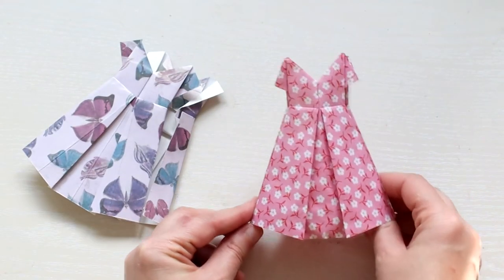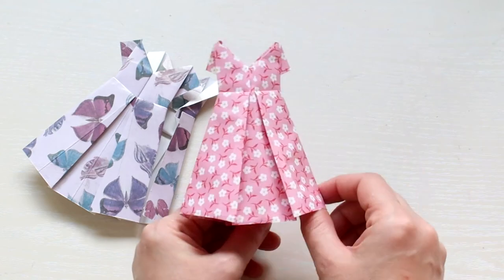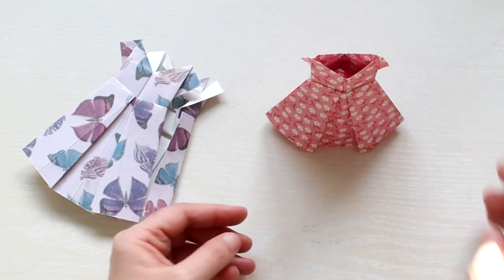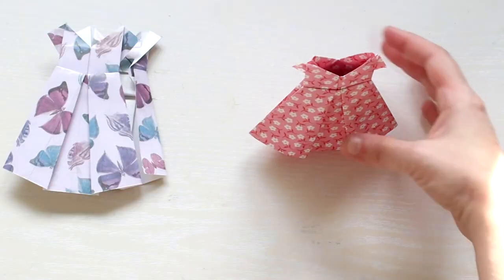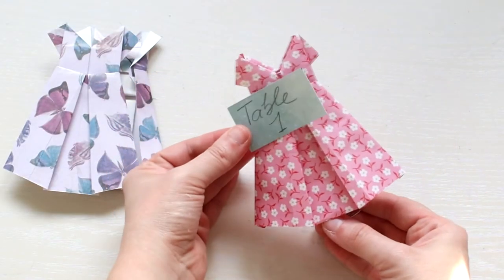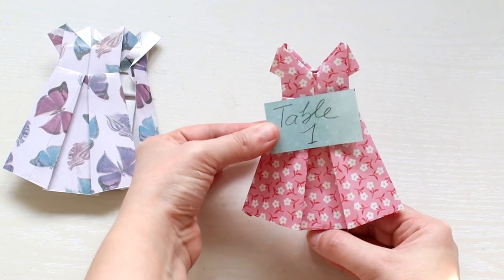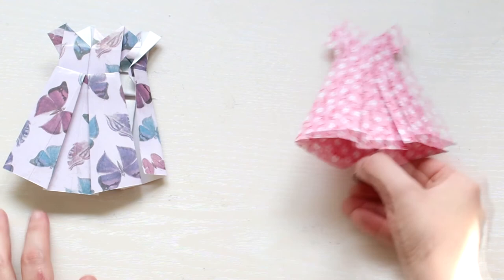The advantage of the three-dimensional shape is that it stands on its own. I think this could be used as a table number. You just add the number and add them on a stand or make them 3D to stay on their own.